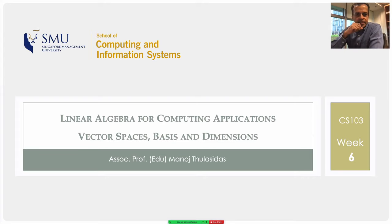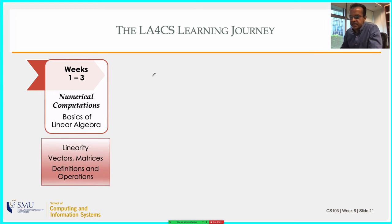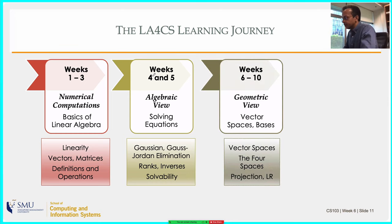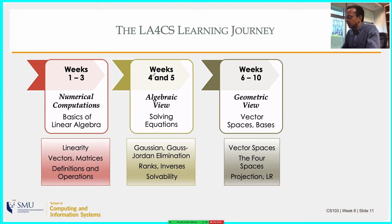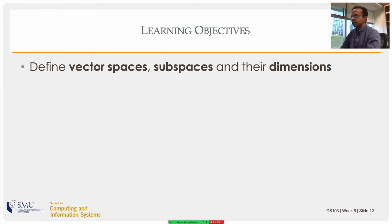Good morning. This is our week six. Today we will be transitioning to the geometry of linear algebra, something much more interesting and sophisticated. Now that we are moving to a different part of the book and the course, let's look at our learning journey so far. We started with linearity and basic operations, then moved on to Gaussian elimination and Gauss-Jordan elimination to get solutions of a system of linear equations. Today is the start of the geometric view.